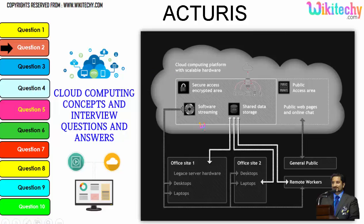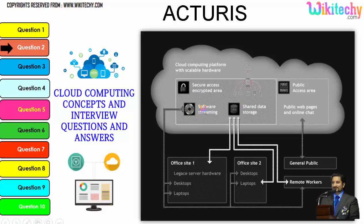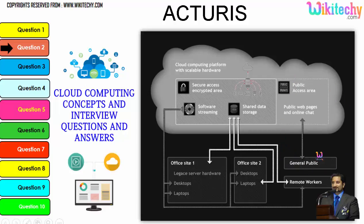In cloud computing, there is a public access area with public web pages for end users, as well as secure data access, shared data storage, and software streaming. Companies can use it as a private kind of environment, and the public can also use it to access web pages or websites. This is how cloud computing works.